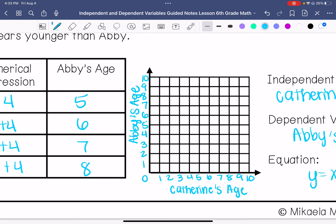When Catherine is 1, Abby is 5, so that means when Catherine is 0, Abby is 4. When Catherine is 2, Abby is 6. When Catherine is 3, Abby is 7. When Catherine is 4, Abby is 8. When Catherine is 5, Abby is 9. When Catherine is 6, Abby is 10.